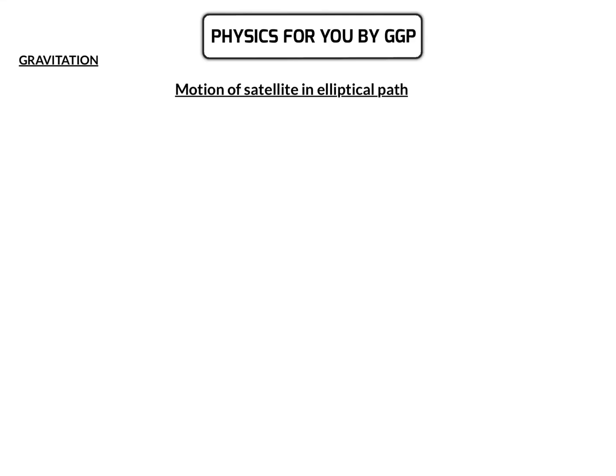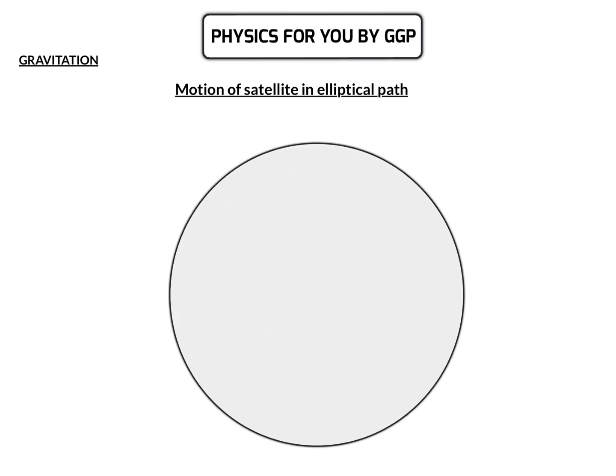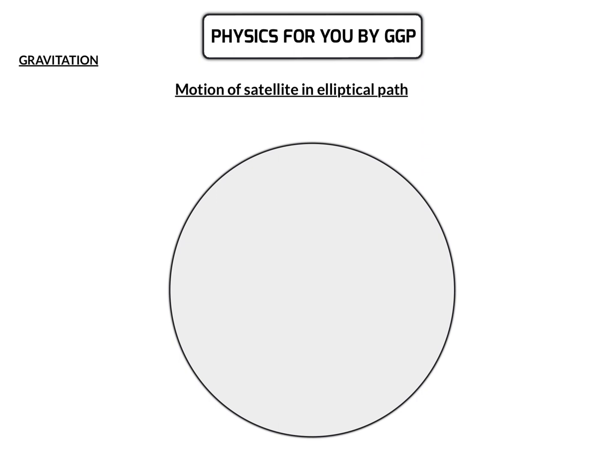Now we'll discuss the motion of a satellite in an elliptical path. Up to now we discussed satellites revolving around a planet in a circular orbit, but it is not necessary that the satellite always moves in a circular orbit — it can move in an elliptical path also.